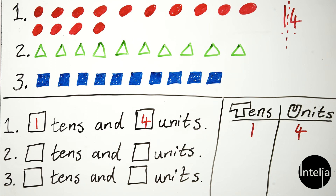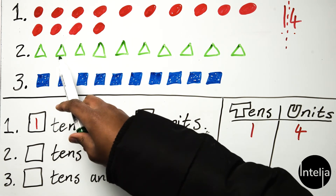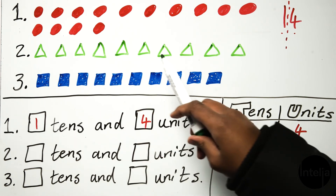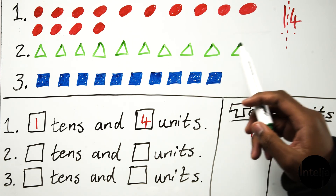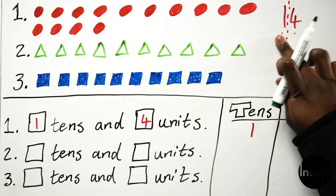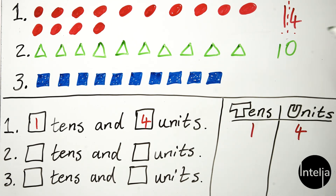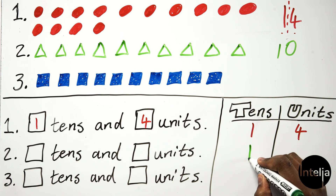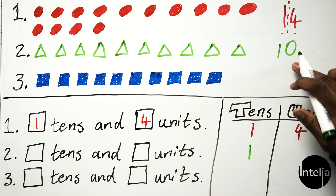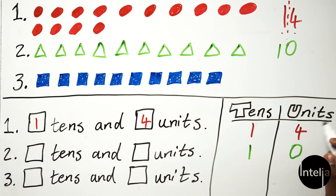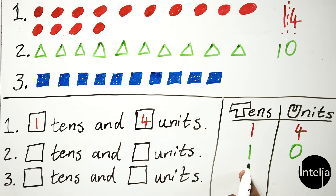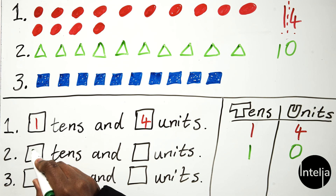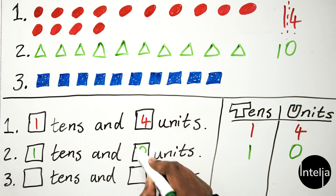Now let's try the second one — we have triangles. Let's count them: 1, 2, 3, 4, 5, 6, 7, 8, 9, 10 triangles. So you write down the number 10. Then you come to your columns — take the first number, which is 1, and write it in the tens column. The second number is 0, and you write it in the units column. So how many tens are in 10? One ten. And how many units are in 10? Zero units. You write 1 and 0.